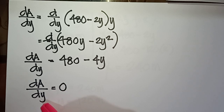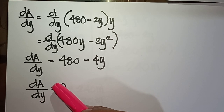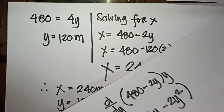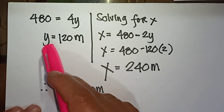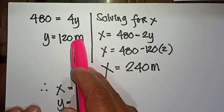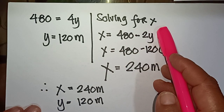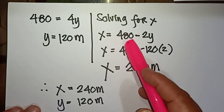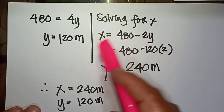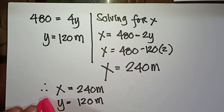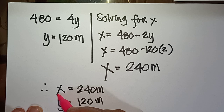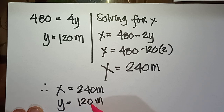Setting the first derivative equal to zero: 480 − 4y = 0, so 4y = 480, giving y = 120 meters. Solving for x: x = 480 − 2(120) = 480 − 240 = 240 meters. Therefore, x = 240 meters and y = 120 meters.